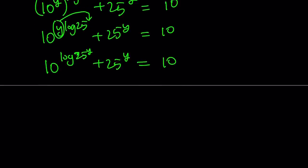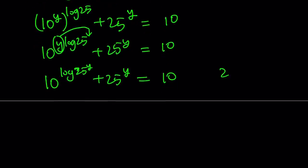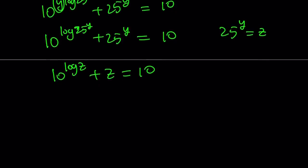At this point, if you want to call 25 to the power y something like, let's say, 25 to the power y is equal to z, you're going to get something like 10 to the power log z plus z equals 10. Isn't that interesting? We could probably proceed this way. Well, I wasn't planning to do it this way, but that's okay. We could also do it differently, but anyways, we could just proceed with this one.